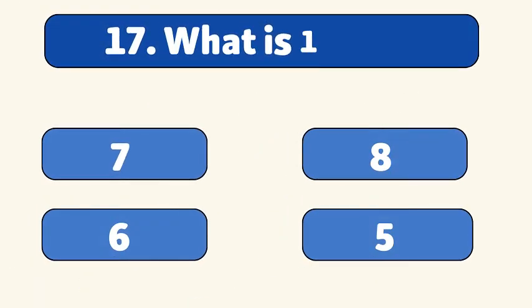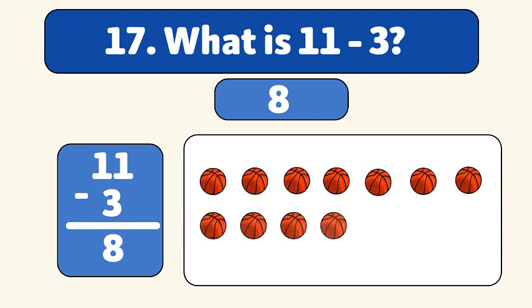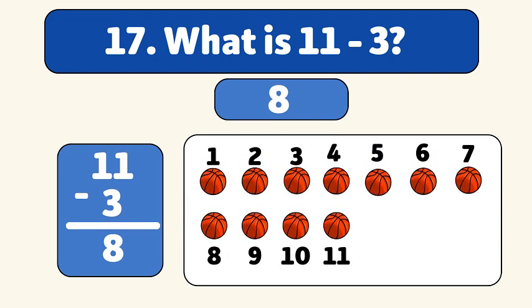What is 11 minus 3? The answer is 8. We start with 11 basketballs and take away 3. 1, 2, 3. We have 8 basketballs now.